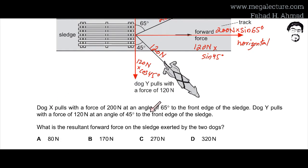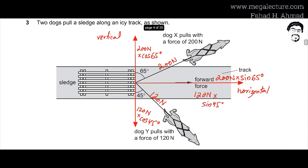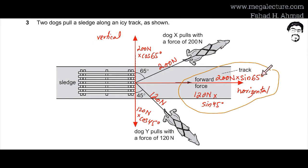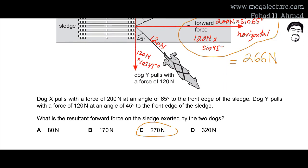Since the question asks only for the resultant forward force, we combine the horizontal components: 200×sin(65°) + 120×sin(45°). Using a calculator, this comes out to approximately 266 N, and the closest answer option is 270 N. So option C is the correct answer — the forward force is approximately 270 N.